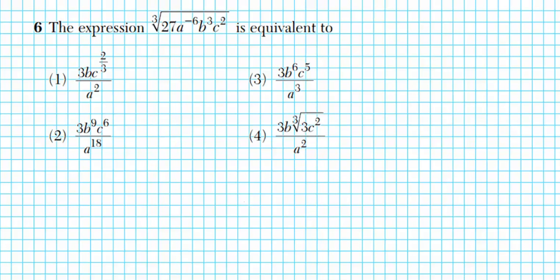Alright, let's take a look at number 6. It says the expression square of the cube root of 27a to the negative 6b to the third c squared is equivalent to, so we're going to be using multiple properties of exponents here. So we have the third root of 27a to the negative 6b to the third c squared. Now we're going to use the nth root property of exponents to express this as a power and at the same time, if possible, we want to try to express every single term as a power too.